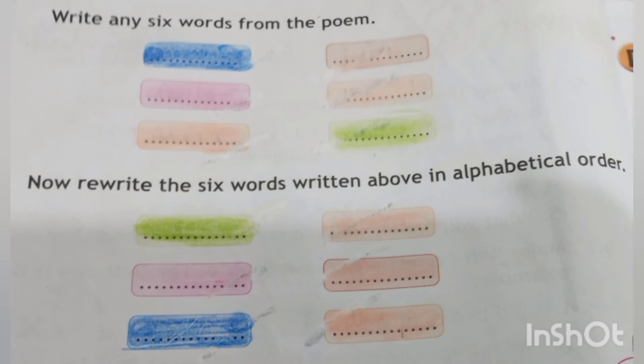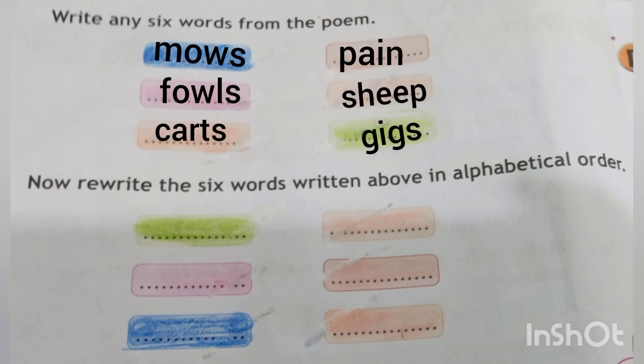Come to the next page, page number 10. Write any six words from the poem. I am writing six words: number one, mows; number two, fowls; number three, cards; number four, pain; number five, sheep; number six, gigs.